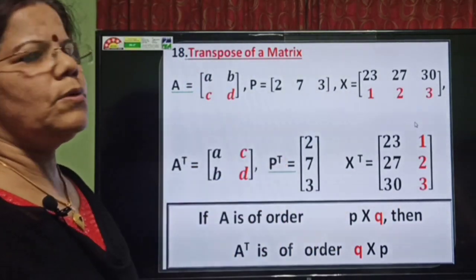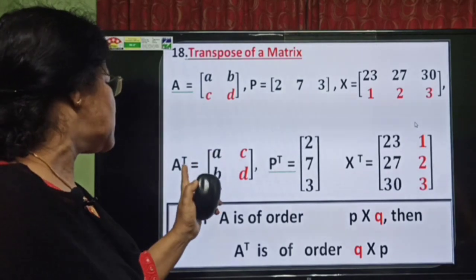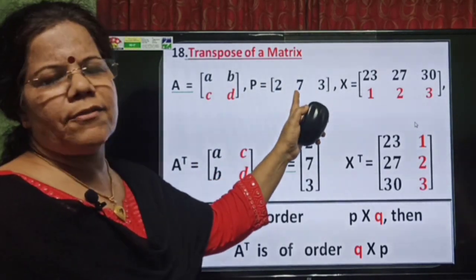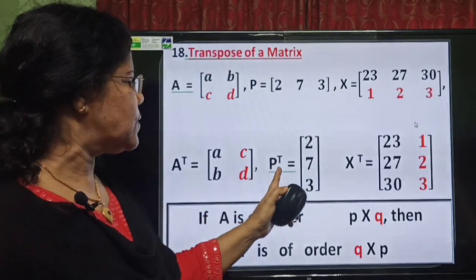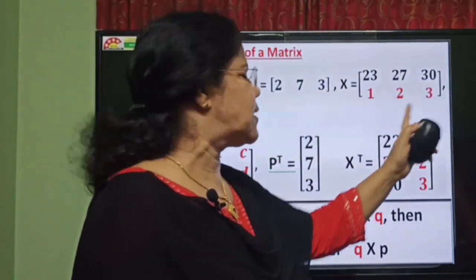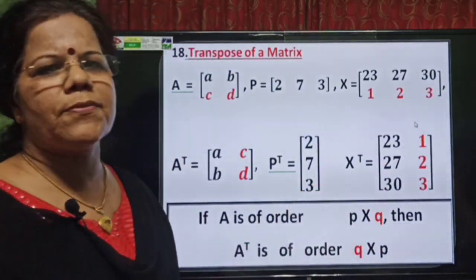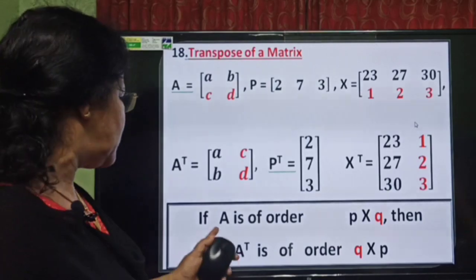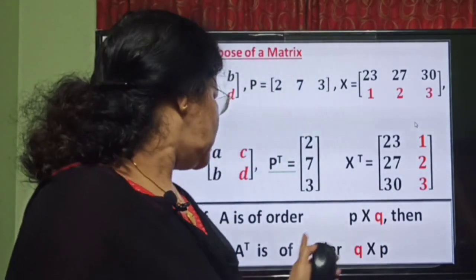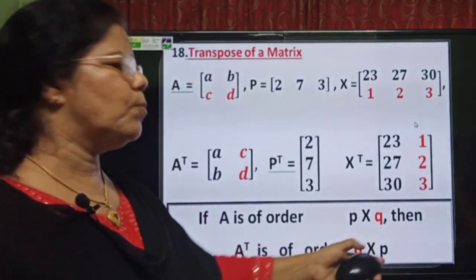Next, see what happens to the order of the matrix. A is a 2×2 matrix; A-transpose is again a 2×2 matrix. P is a 1×3 matrix; P-transpose is a 3×1 matrix. X is a 2×3 matrix and X-transpose is a 3×2 matrix. So if A is a matrix of order P×Q, then A-transpose is of order Q×P.